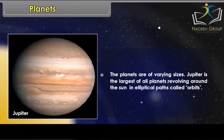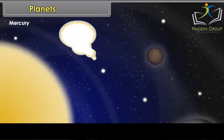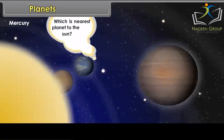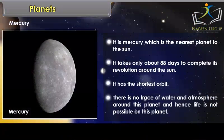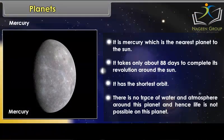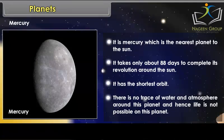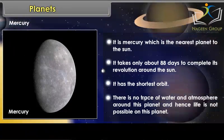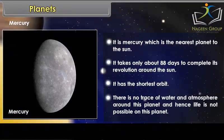Mercury is the nearest planet to the Sun. It takes only about 88 days to complete its revolution around the Sun and has the shortest orbit. There is no trace of water and atmosphere around this planet, and hence life is not possible on Mercury.